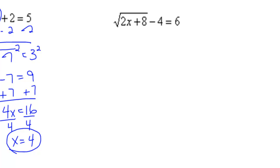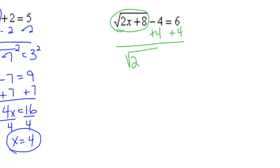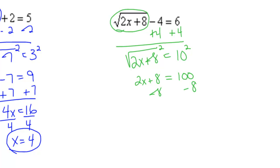For this one, we have the square root of 2x plus 8, minus 4, equals 6. We're going to isolate the square root of 2x plus 8 by adding 4 to both sides. Then I get the square root of 2x plus 8, and that's equal to 10. I'm going to square both sides to undo the square root. I get 2x plus 8 equals 100. Subtract 8 from both sides, giving me 2x equals 92.